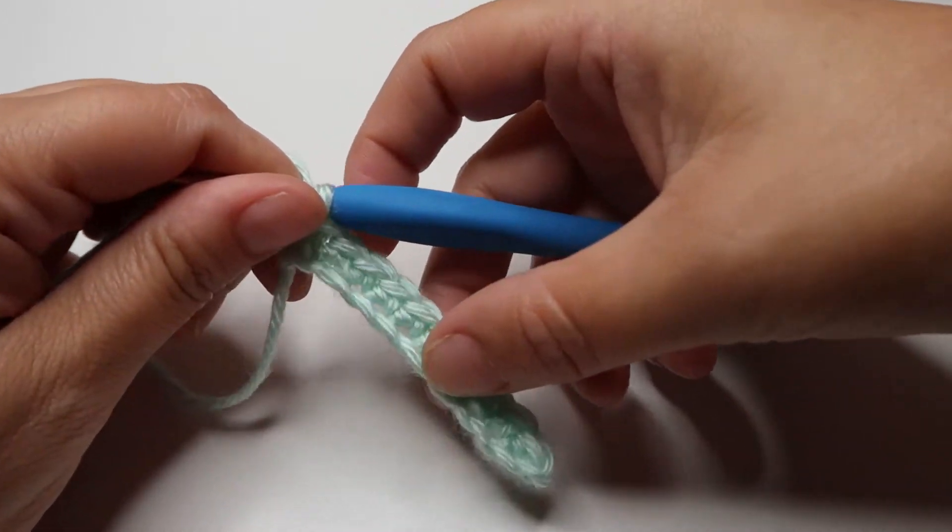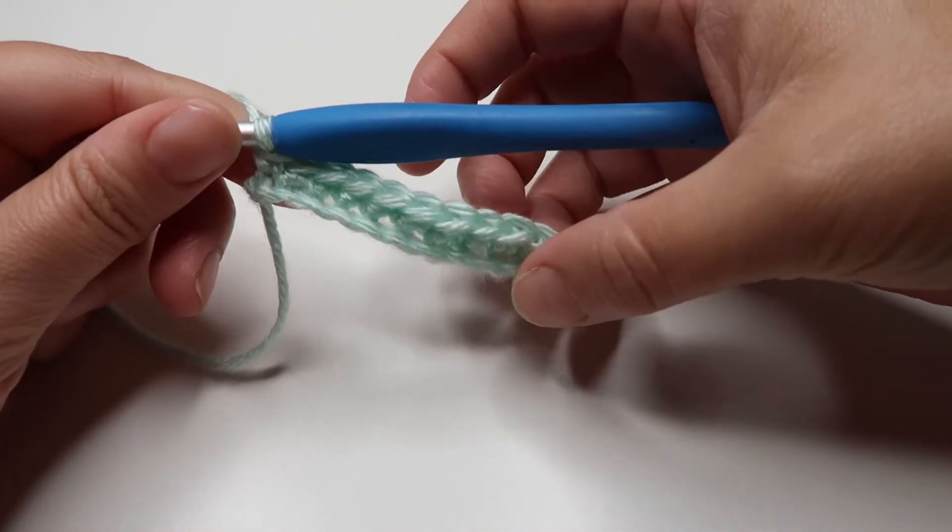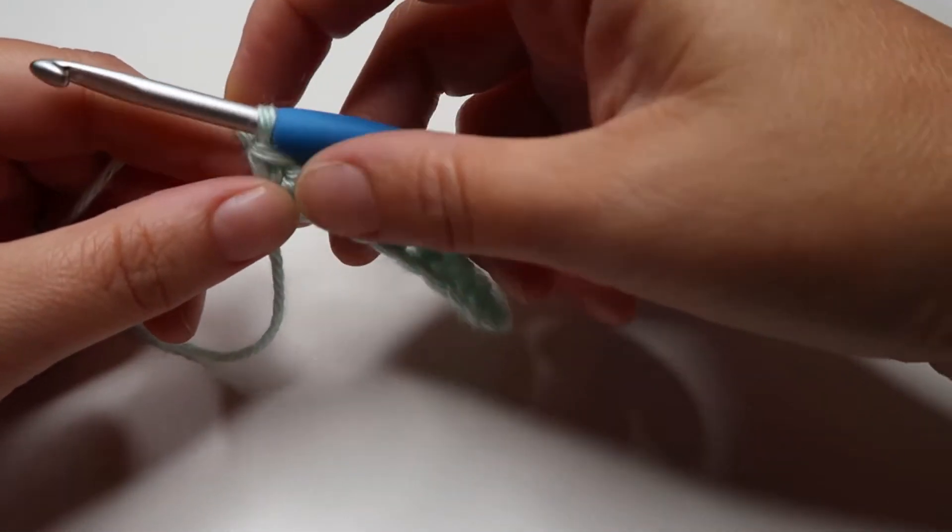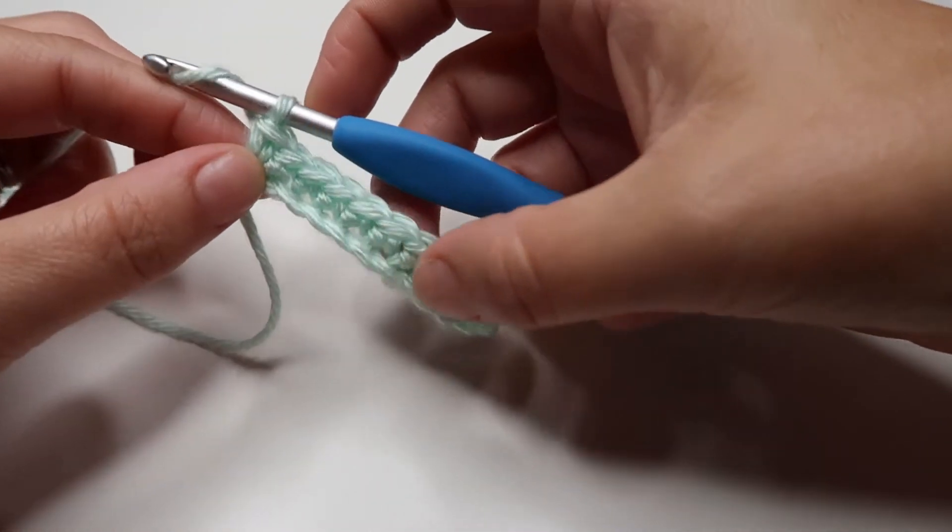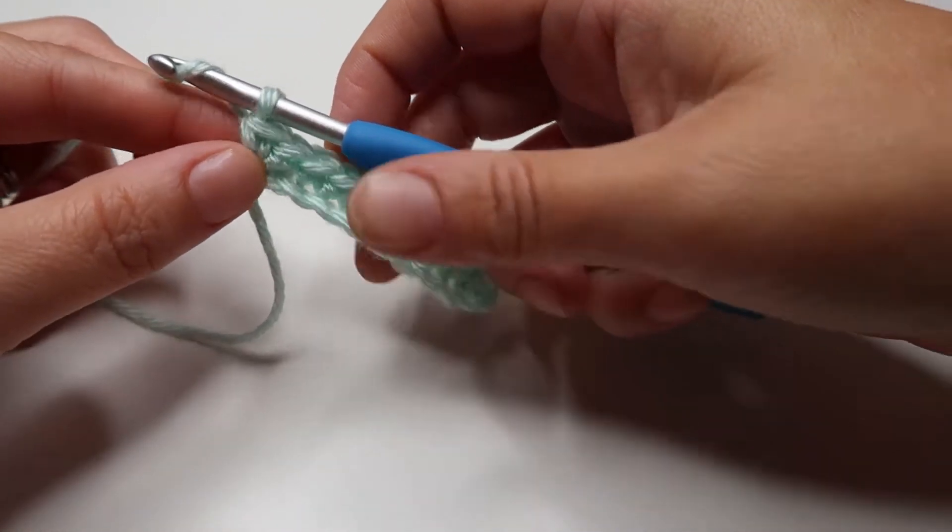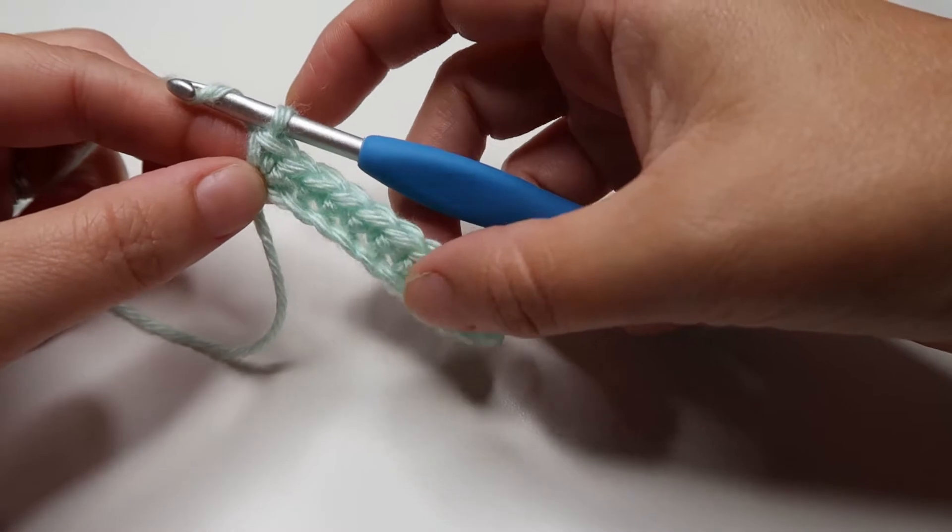When a pattern calls for an increase, it's just telling you to put two or more stitches into one stitch. I'm just starting with a little foundation of single crochets. I have ten stitches.